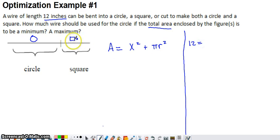So what I'm going to say is this 12 inches better be equal to 4x, the length of the distance around the square, the perimeter of the square, plus the circumference of our circle, which would be 2πr.